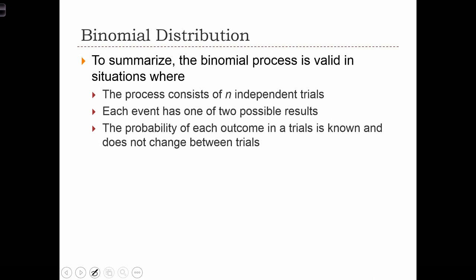Each trial that we have can only consist of two possible results, a success or a failure. And the probability of each outcome in a trial is known, and it does not change between trials. So the probability of snow on any given day is 25%, and it doesn't change from day to day. In these cases, the binomial distribution is an appropriate probability distribution to use when we're modeling a process.